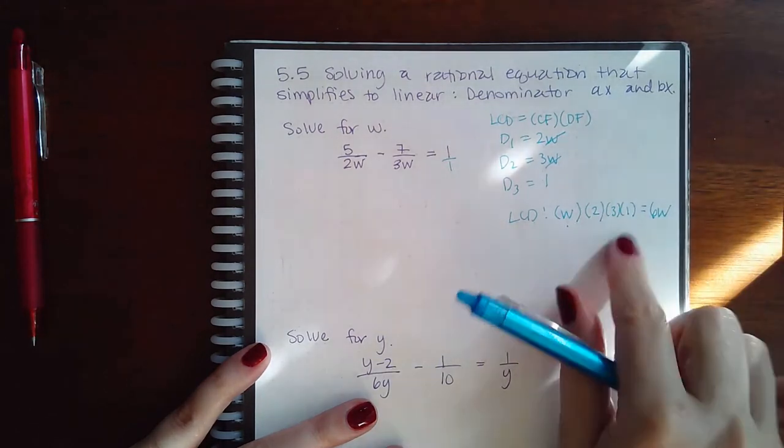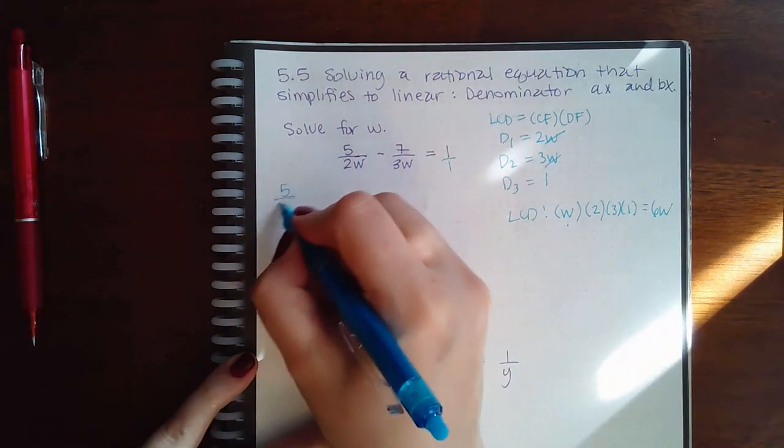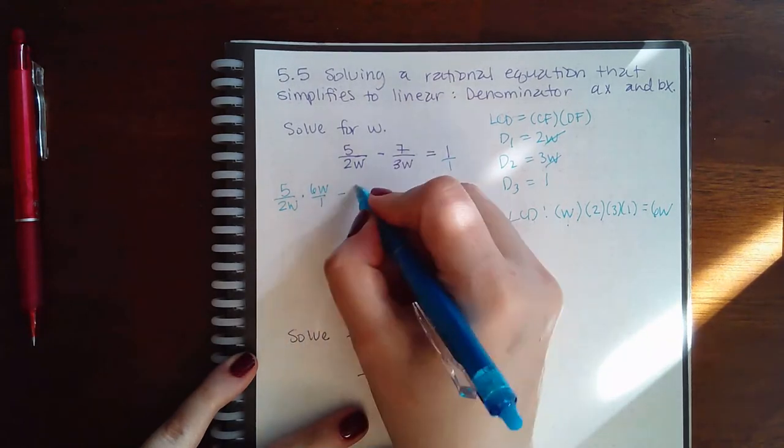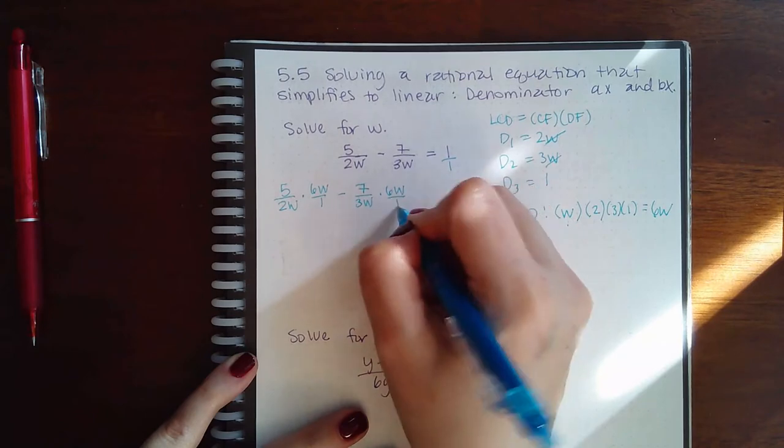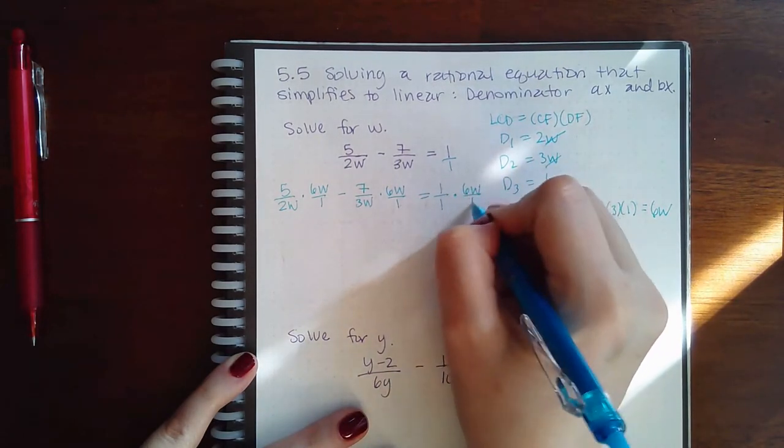So my LCD is going to be 6W. So I'm going to take this fraction and multiply it by 6W over 1, multiply this fraction by 6W over 1, and multiply this fraction by 6W over 1.